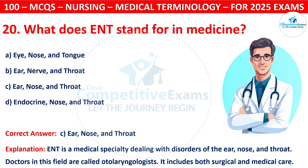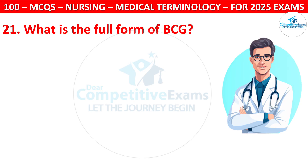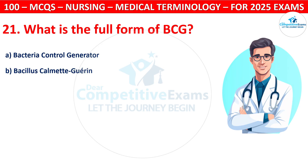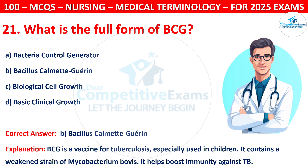Question 21: What is the full form of BCG? Options are: Bacterial Control Generator, Bacillus Calmette-Guérin, Biological Cell Growth, or Baciclinal Growth. The correct answer is B, that is Bacillus Calmette-Guérin. BCG is a vaccine for tuberculosis, specially used in children. It contains a weakened strain of Mycobacterium bovis. It helps boost immunity against TB.